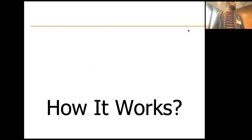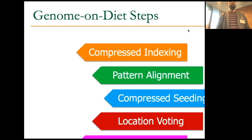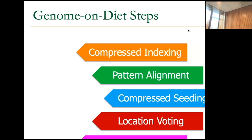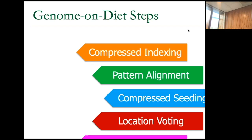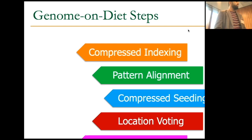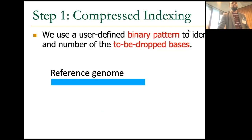To solve that problem, we proposed Genome on Diet — a five-step framework. We call it a framework, not a tool, because we envision each step as an individual tool you could use for any application. We show how to do read mapping, containment search, and metagenomic classification using it.